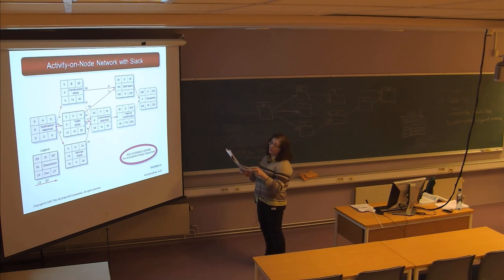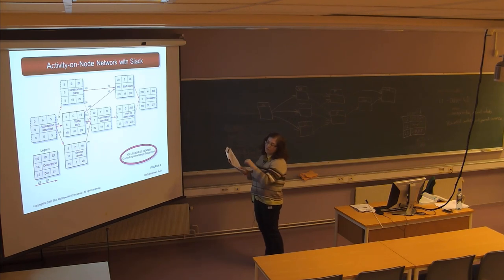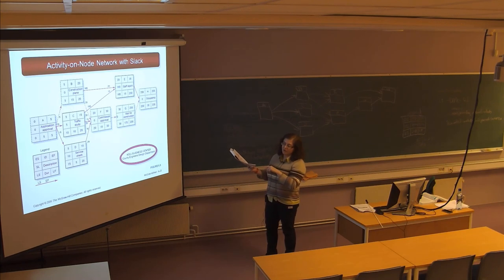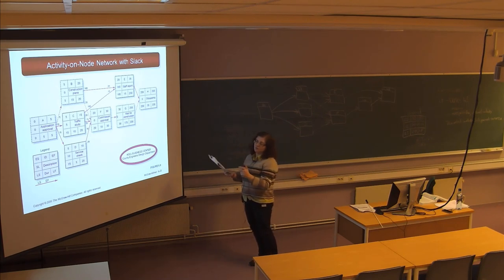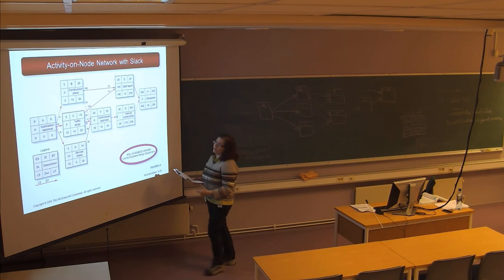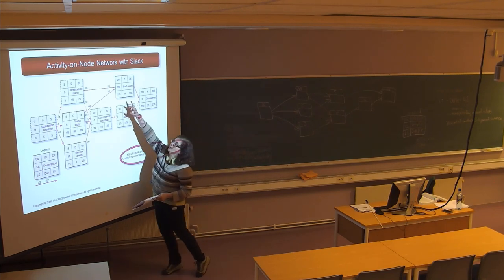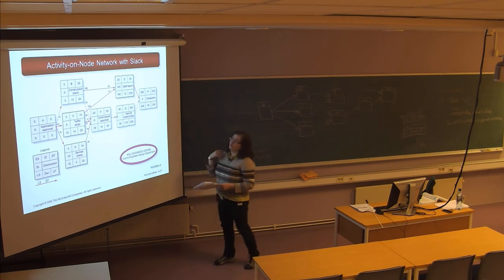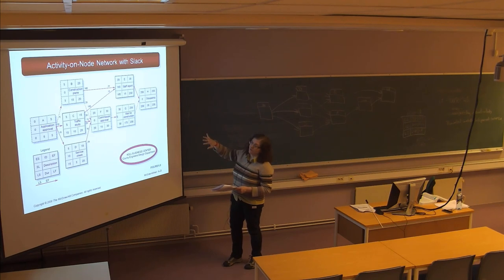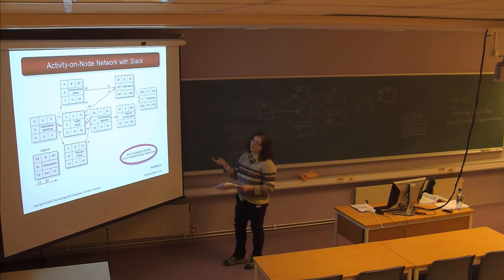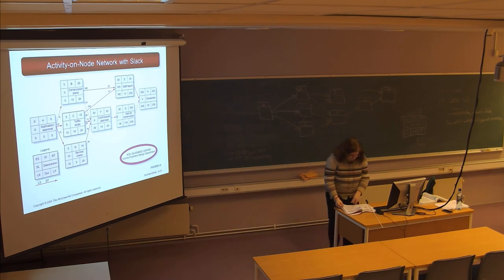If the network had two critical paths — two paths where the slack number is zero — then if you need more time for either of those paths, you need more time for the whole project, making it a sensitive network. Also, if the non-critical paths didn't have much slack time — if that 165 were a smaller number — it would be a more sensitive network. As this example stands, it's a fairly non-sensitive network because it has only one critical path and a large amount of slack in the non-critical path.